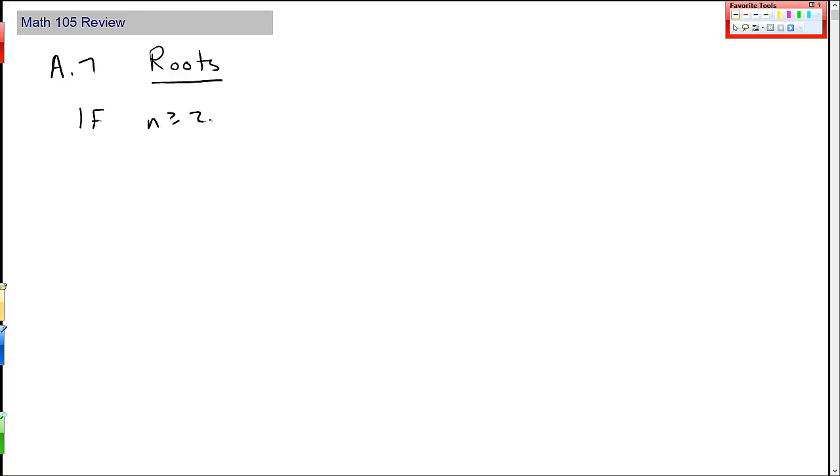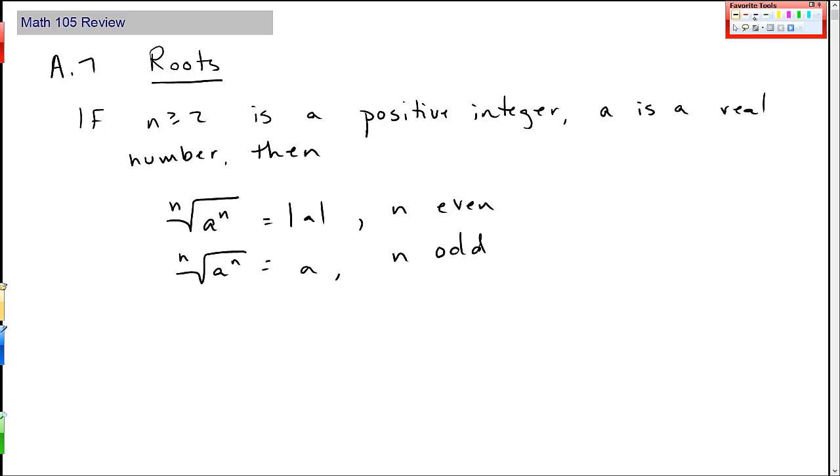If n is greater than or equal to 2, n is a positive integer, and a is a real number, then the nth root of a to the n is the absolute value of a when n is even. And the nth root is just a when n is odd. For example, the square root of negative 3 squared is actually equal to positive 3, and that's where this absolute value comes in.